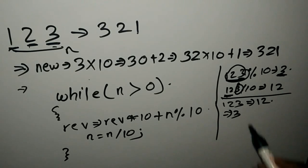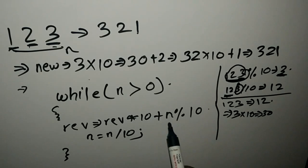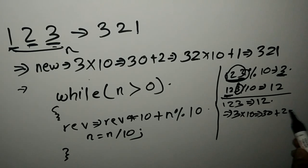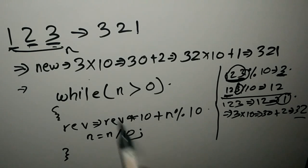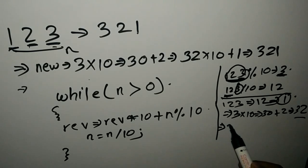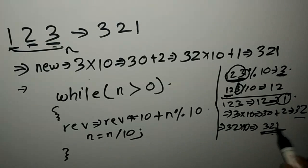Currently reverse contains 3, so we multiply reverse by 10 — that's 3 into 10, which gives us 30 — and then take another digit. So now our number becomes 32. Then we divide 12 by 10, so only 1 remains. As 1 is greater than 0, we multiply 32 by 10 and add the digit 1. So now our number becomes 321, which is the final value. This algorithm works quite fine.